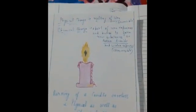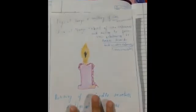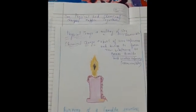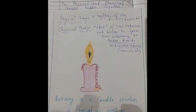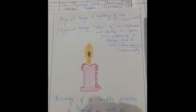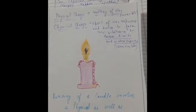Can a physical and chemical change happen together? Yes. Burning of a candle involves both a physical and a chemical change. In the burning of a candle, both changes occur simultaneously.